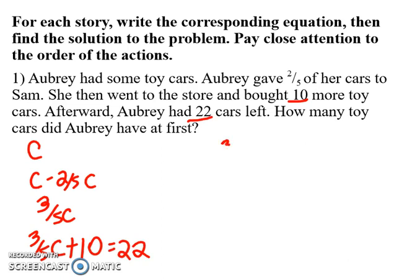Now they want me to solve this. So I can actually say, how much is that? So it's three-fifths C plus ten equals 22. I'm going to subtract the ten from both sides. This will give me three-fifths C equals 12.